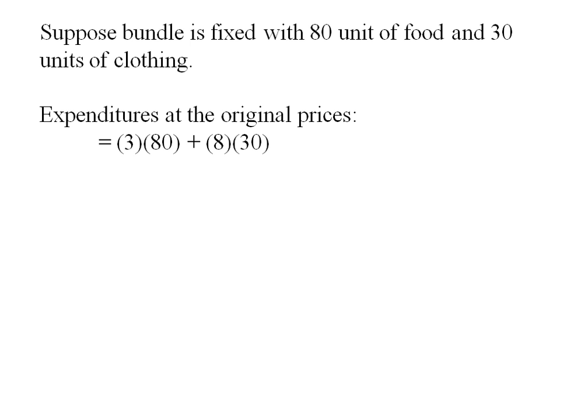So let's suppose the bundle is fixed with 80 units of food and 30 units of clothing. The expenditure at the original prices would be the three dollars and the eight dollars times those quantities, or the 480.